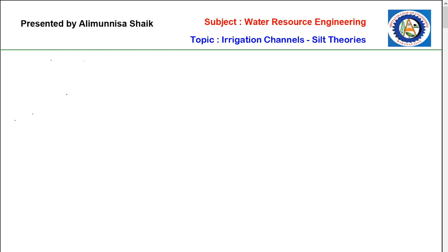What is meant by channel? A channel, or generally called a canal, is an artificial channel in a trapezoidal shape. This trapezoidal shaped canal is generally constructed for carrying water from a source to a point. The source can be a reservoir, dam, or river, and the point will be your irrigation fields or power supply stations.